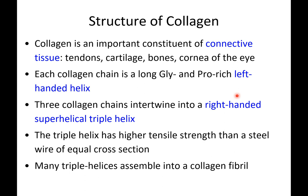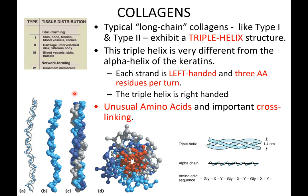Collagen is very similar to keratin. What's different is that collagen has long stretches of glycine and proline, so we don't see the characteristic right-handed helix. Instead we see a left-handed helix, and three left-handed helices fold together in a right-handed fashion to form a triple helix.